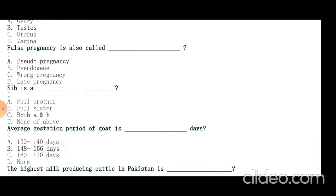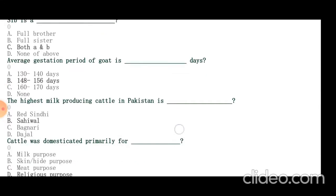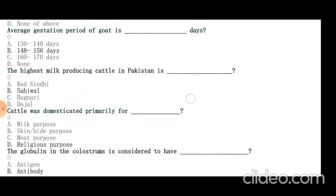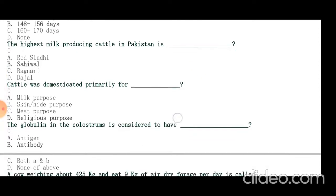Average gestation period of goat is 148 to 156 days, 5 months, 5 days. The highest milk-producing cattle is Sahiwal of Pakistan. Cattle was domesticated primarily for religious purpose by Hindus in India. The globulin in colostrum is considered to have antibody.